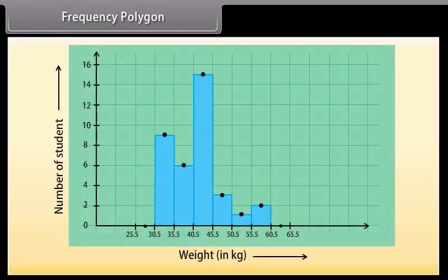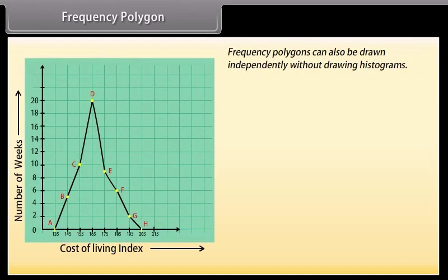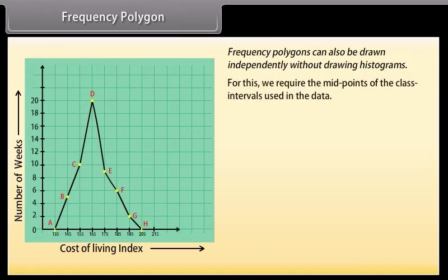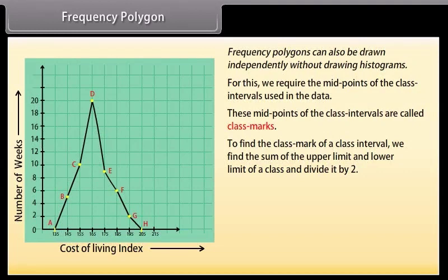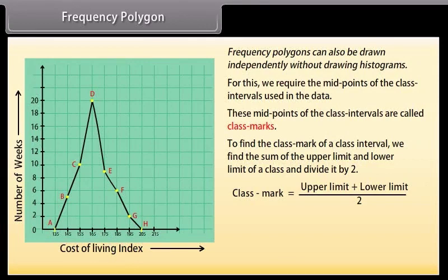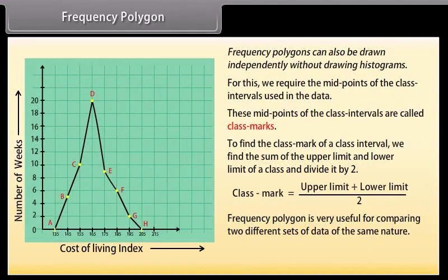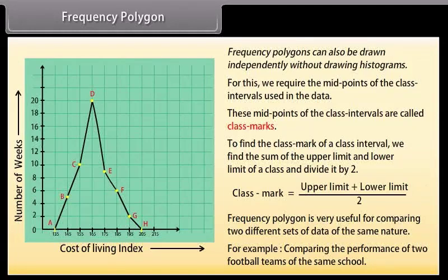Frequency polygon. In a frequency polygon, a line graph is drawn by joining all the midpoints of the top of the bars of a histogram. Frequency polygons can also be drawn independently without drawing histograms. For this, we require the midpoints of the class intervals used in the data. These midpoints are called class marks. To find the class mark of a class interval, we find the sum of the upper limit and lower limit of a class and divide it by 2. Thus, class mark equals upper limit plus lower limit whole upon 2. Frequency polygon is very useful for comparing two different sets of data of the same nature, for example, comparing the performance of two football teams of the same school.